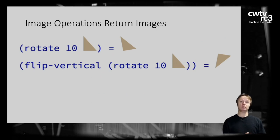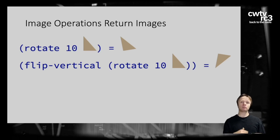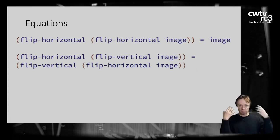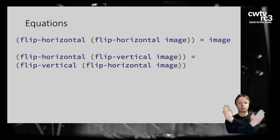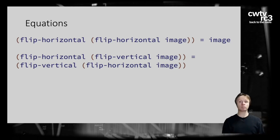These two flip functions transform an image: an image object goes in and they return an image object, which you can pass to other operations. For example, you can rotate a triangle and pass that result into flip vertical to flip the rotated image. Some of these things can be generalized to equations that hold for all images. First: if you flip an image and flip it again, you get the same image. Second: flipping horizontally then vertically gives the same result as flipping vertically then horizontally.